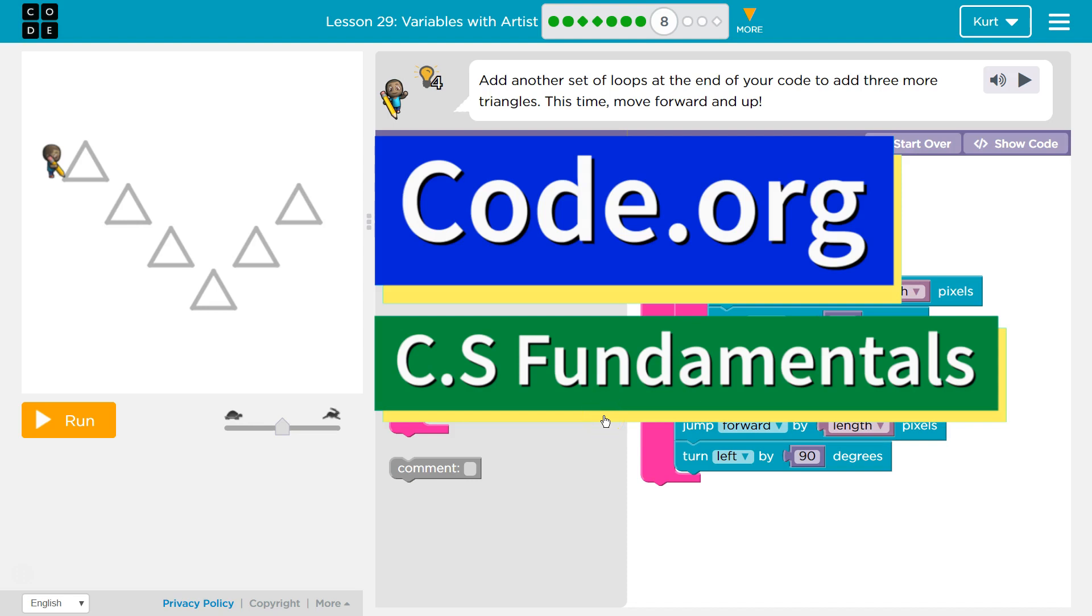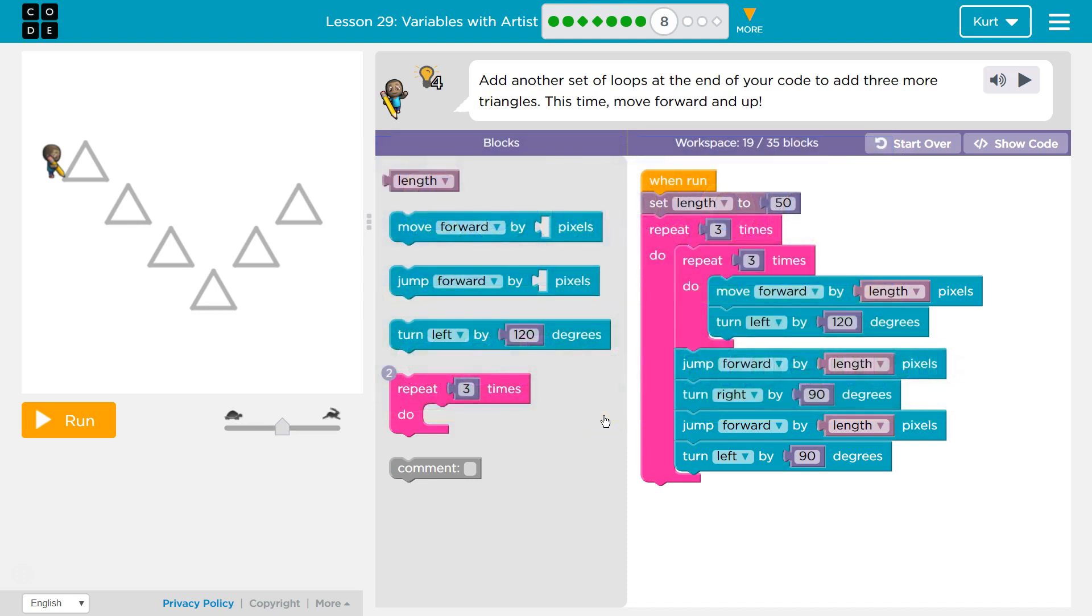This is code.org. I'm currently working on CS Fundamentals. Add another set of loops at the end of the code to add three more triangles, this time moving upwards.